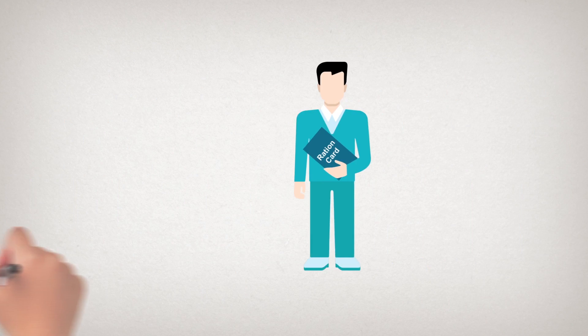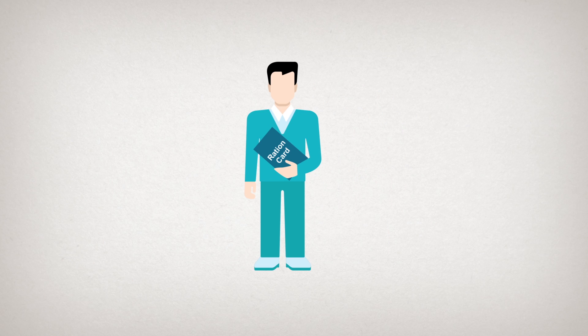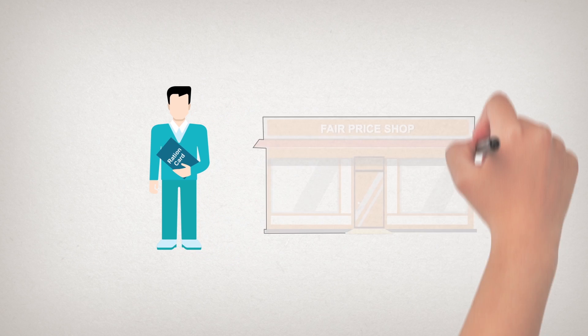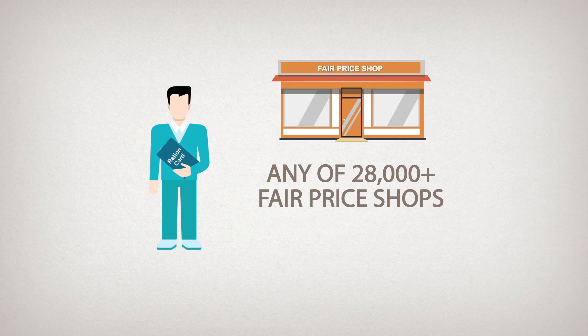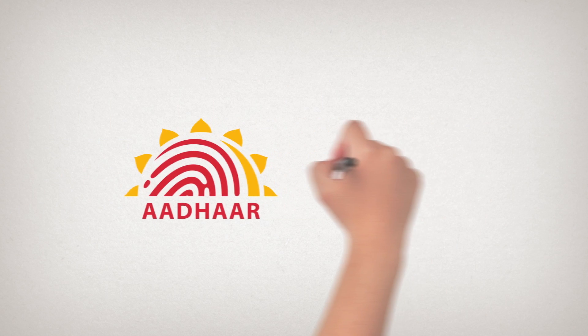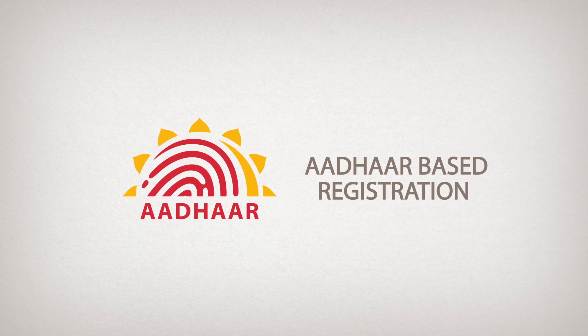A person holding a ration card, known as a beneficiary, can go to any fair-price shop anywhere in the state to get his ration. This is made possible by bringing in aadhaar-based registration into the process.